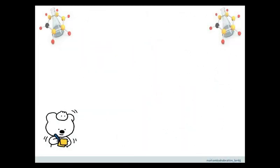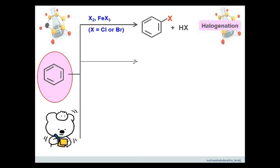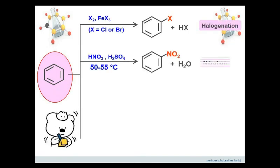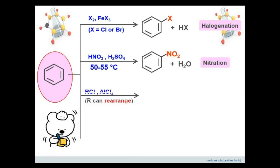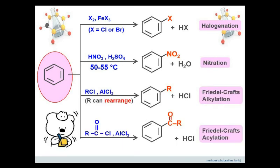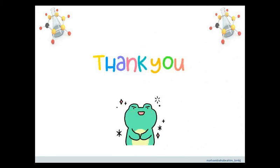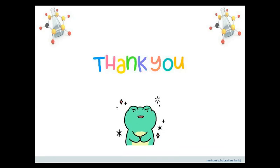So these are the summary for electrophilic aromatic substitution for benzene. Note that only one hydrogen atom from the benzene is substituted with an atom or group for each reaction. You also need to remember the conditions for each reaction to occur. That's all for 6.3, Chemical Properties of Benzene and its Derivatives. Thank you for watching.